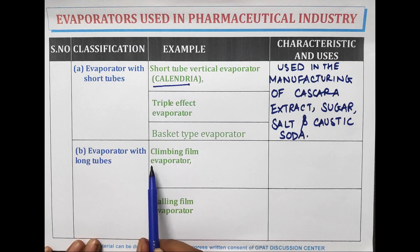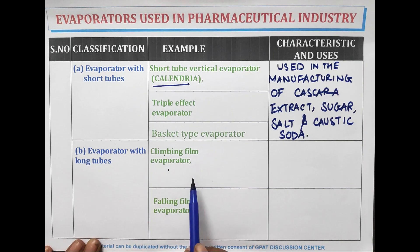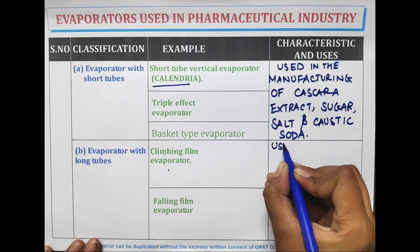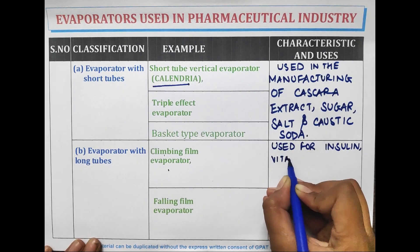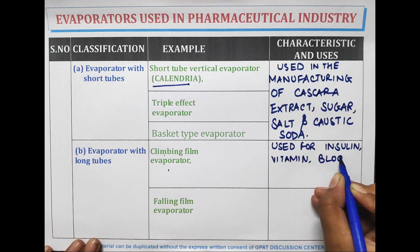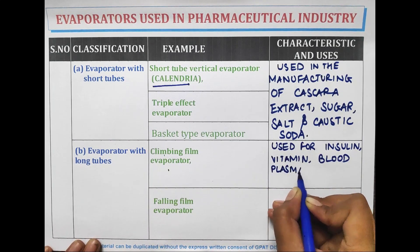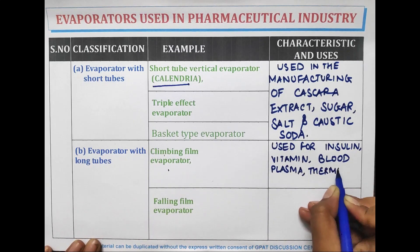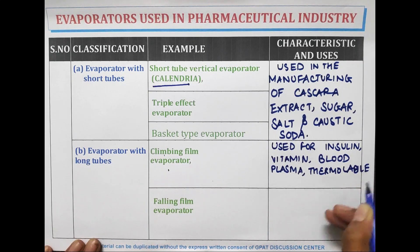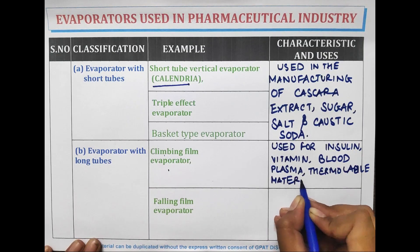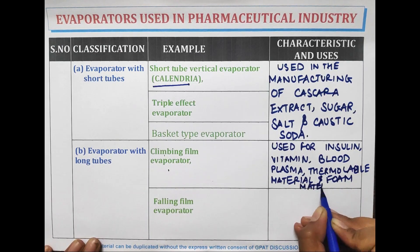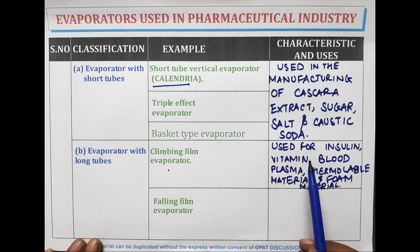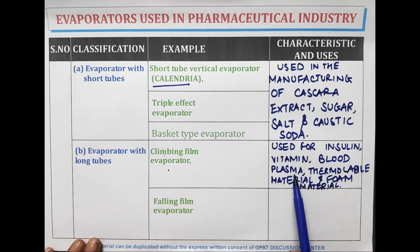Evaporators with long tubes are of two types: climbing film evaporator and falling film evaporator. The climbing film evaporator is used for insulin, vitamin, blood plasma, thermolabile material, and foam material.